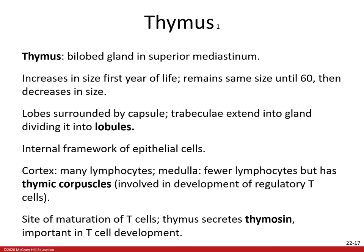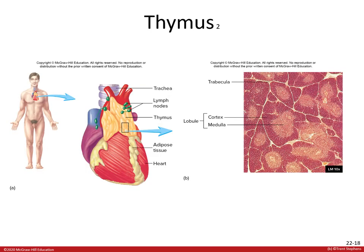The thymus is also the site of maturation of T cells. The thymus secretes a hormone called thymosin, which is important in T cell development. The histology slide shows lobules distinctly, with the cortex on the outside, the medulla as the lighter inside, and the trabeculae separating the lobules.